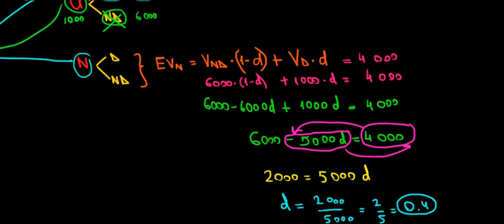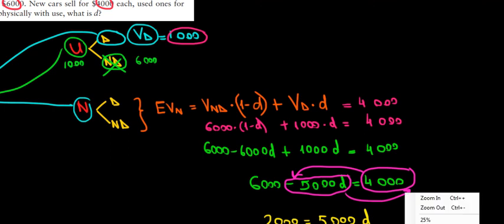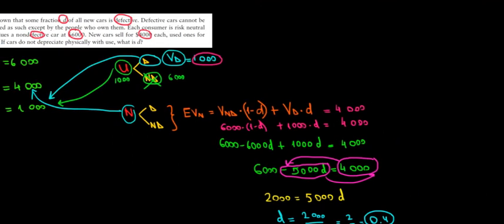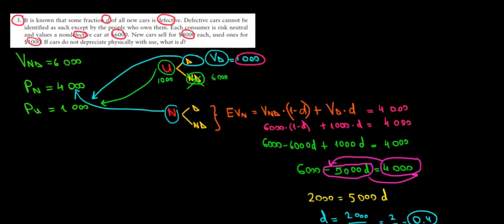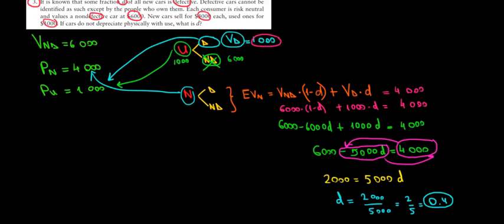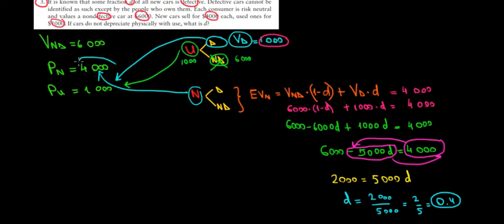What does that mean? We found the proportion of defective cars that consumers allow — the probability they accept — so that they're willing to pay four thousand dollars for a new car. They know they won't get a non-defective used car, since the only used cars on the market are defective. So the only way for them to buy a new car is to take into account the risk of having a defective car, and from there it's just math. Hope this makes sense and we are done.